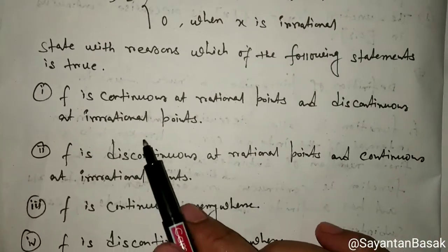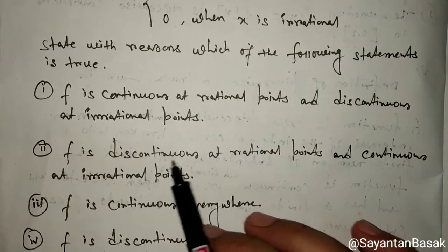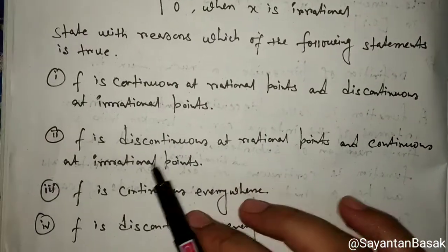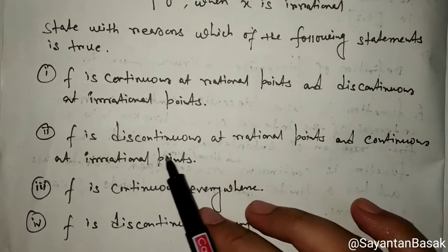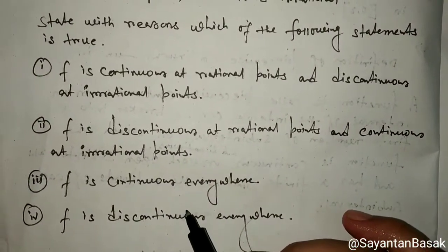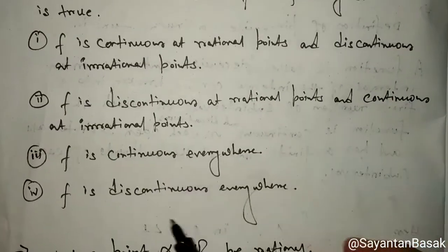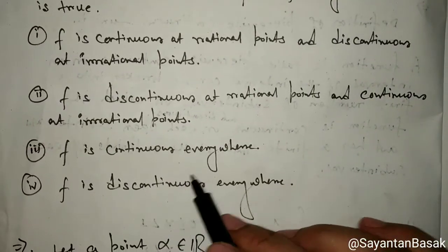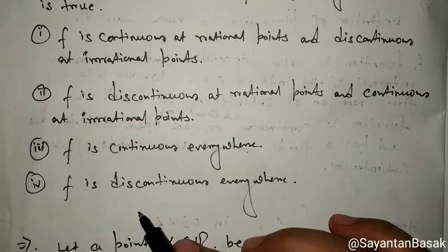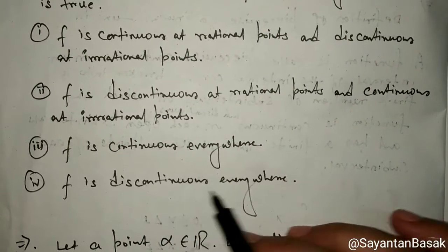Option 1: f is continuous at rational points and discontinuous at irrational points. Option 2: f is discontinuous at rational points and continuous at irrational points. Option 3: f is discontinuous everywhere. Option 4: f is discontinuous everywhere.